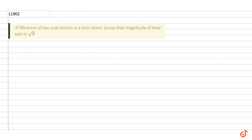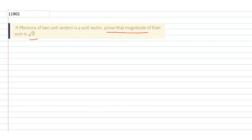A difference of two unit vectors is a unit vector. Prove that the magnitude of their sum is root 3.